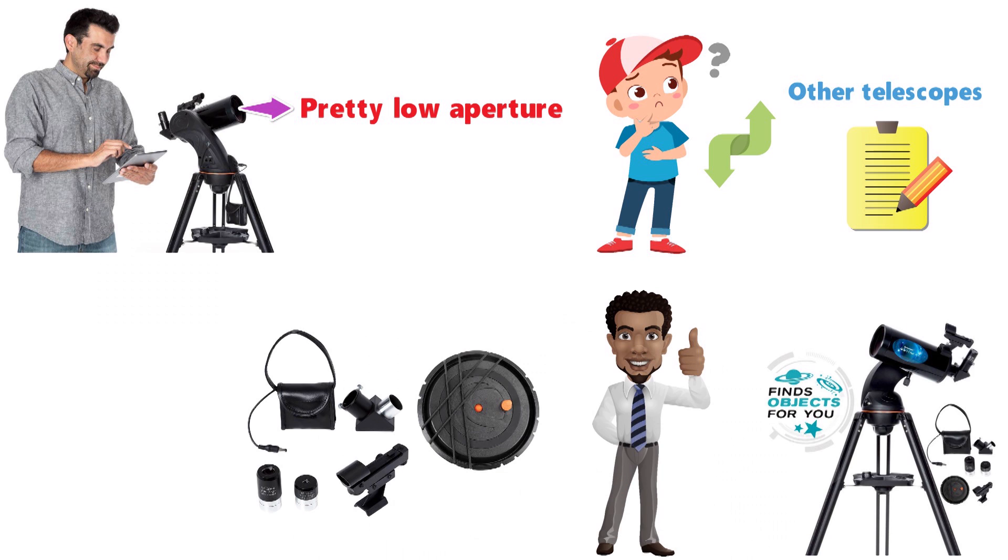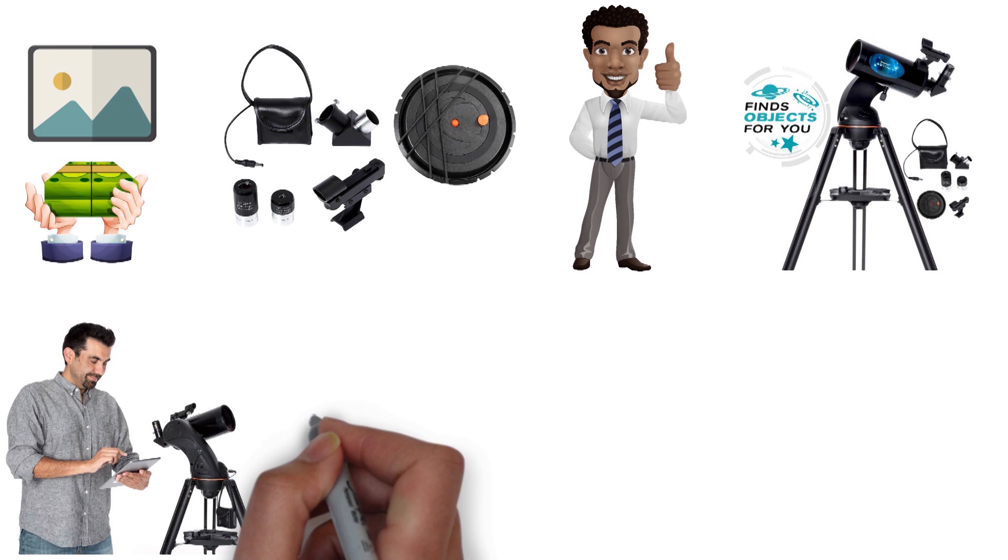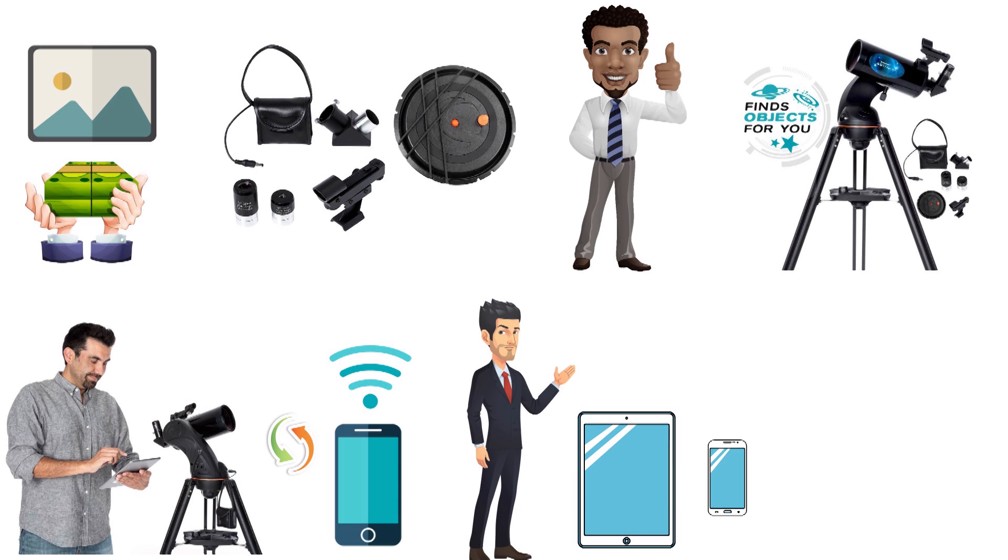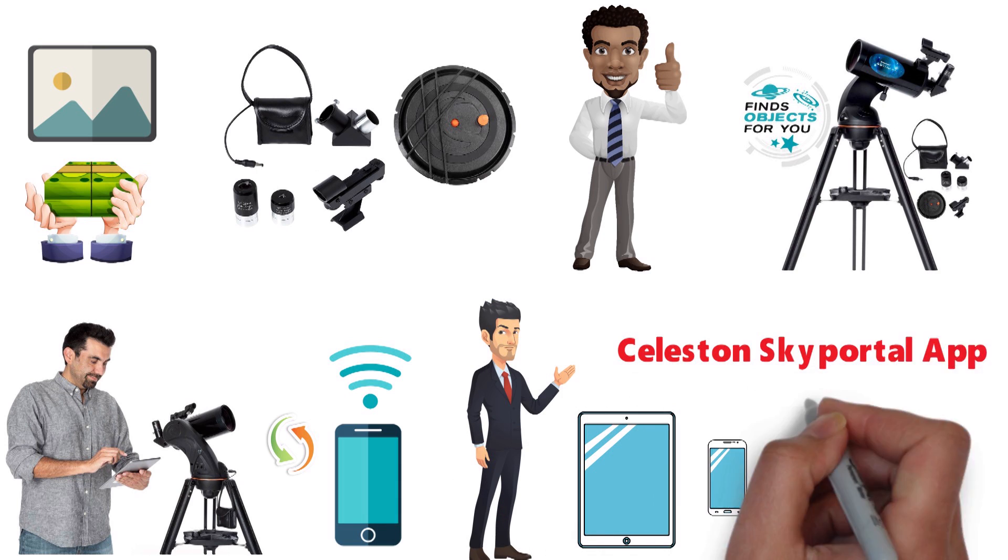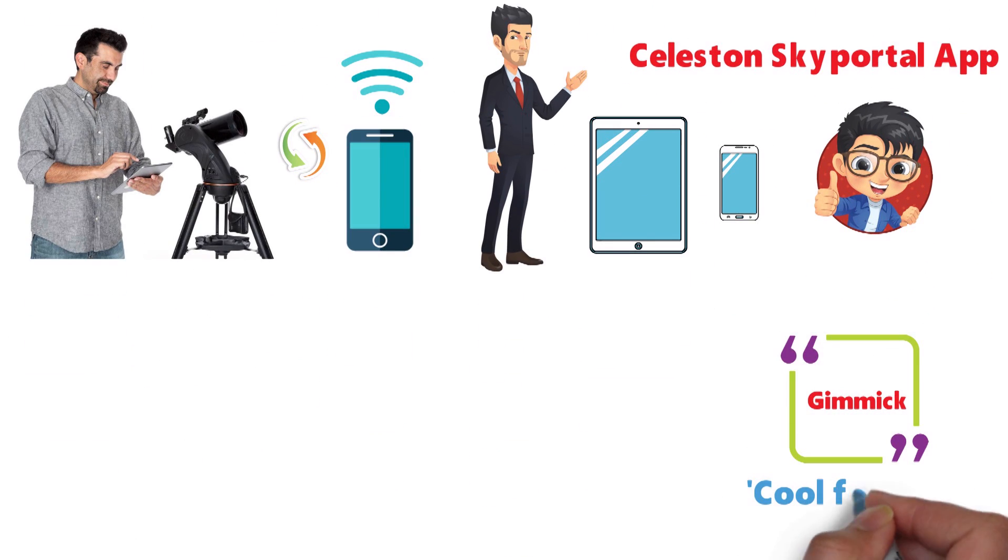It comes with two Kellner eyepieces, which help to create a good image without being particularly expensive either. The main reason that people are attracted to the Astrofi is that it is easily integrated with your WiFi and your phone. This means that you can easily use it with your iPhone or your iPad. You can actually install an app and use your device to control the telescope. While this might sound like a gimmick, it's actually a pretty cool feature.